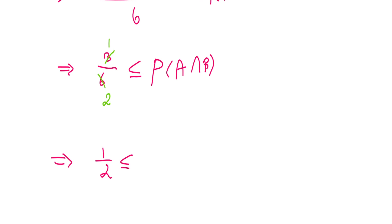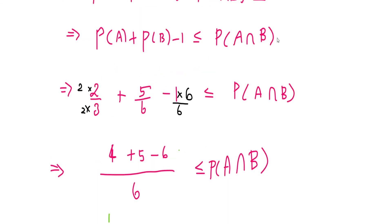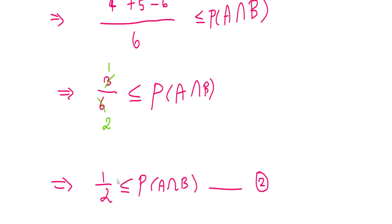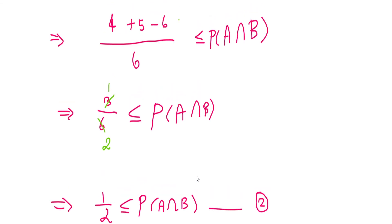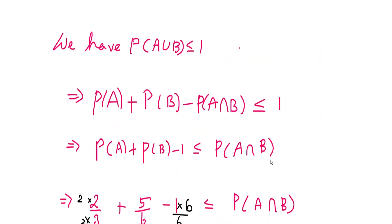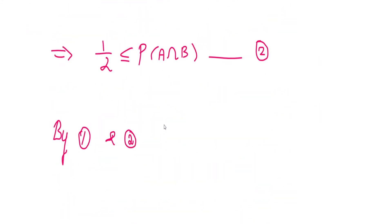From equation number 2, we have 1/2 ≤ P(A∩B). From equation number 1, P(A∩B) ≤ 5/6. Combining equations 1 and 2, we get the second part: 1/2 ≤ P(A∩B) ≤ 5/6. Thus both parts of the proof are complete.